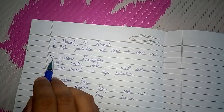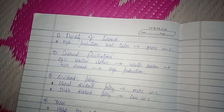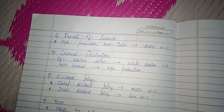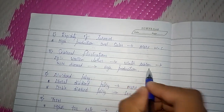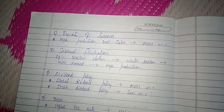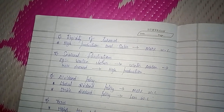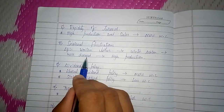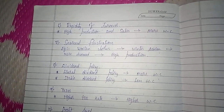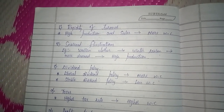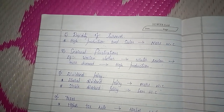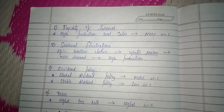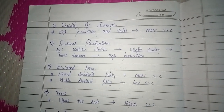The seventh factor is seasonal fluctuations. Some products have high demand only in a particular season — for example, woolen clothes have high demand in winter. During that season the company needs to manufacture more, so it requires higher working capital. Though the company may manufacture throughout the year, higher working capital is needed to meet peak seasonal demand.